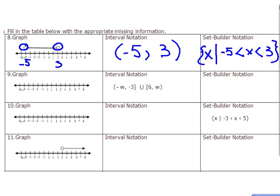And again all these three things in a different way represent the same thing. The parentheses, the less than, and the clear circle. They all represent the fact that the number, the end point, is not part of that interval. Let us go to number 9.